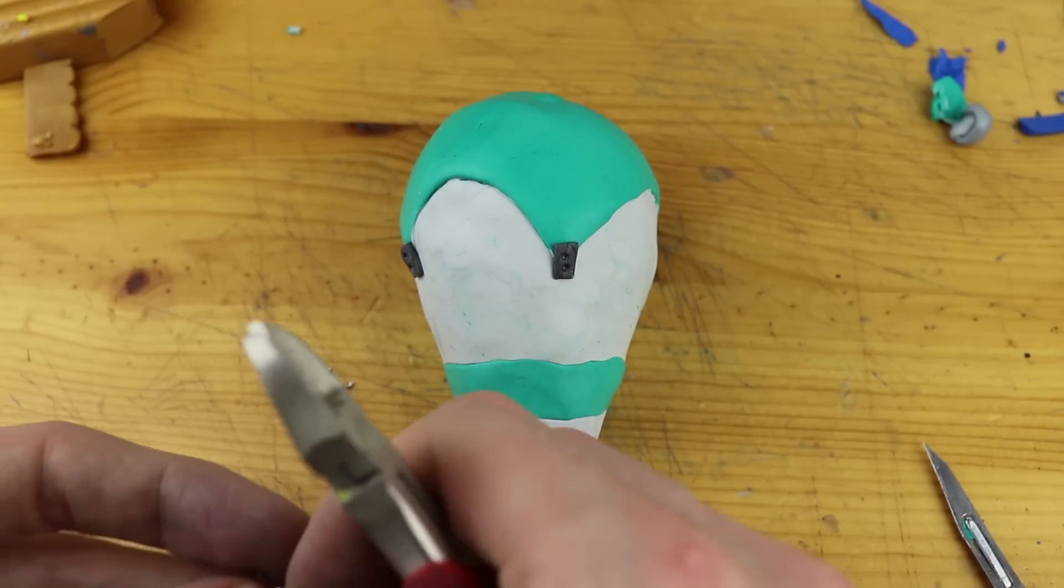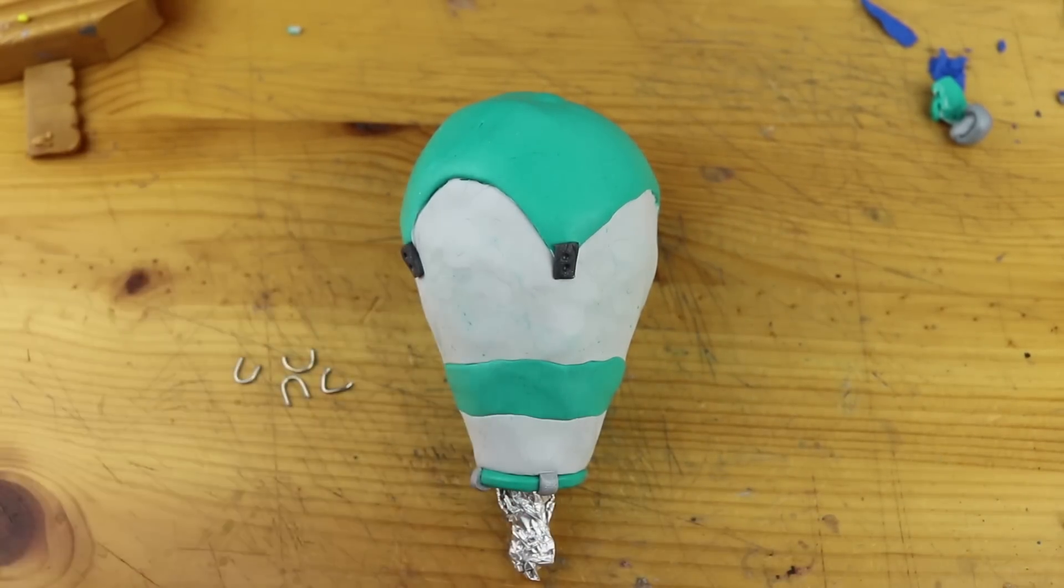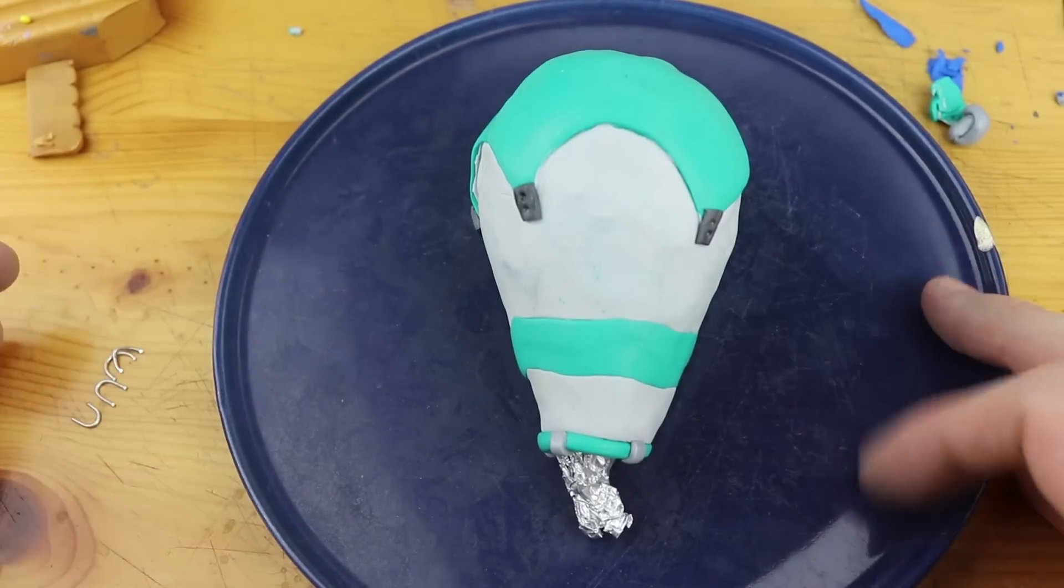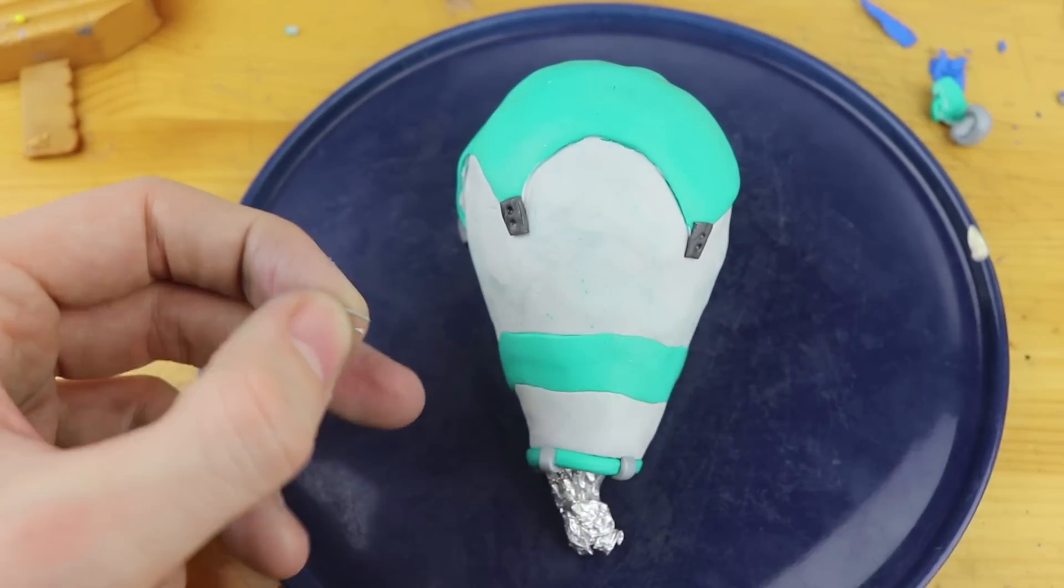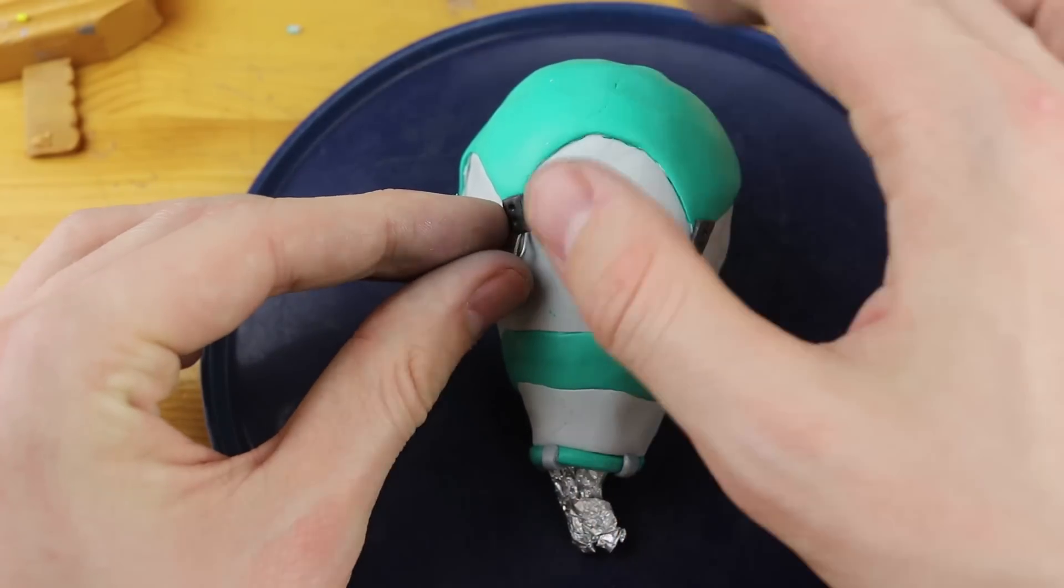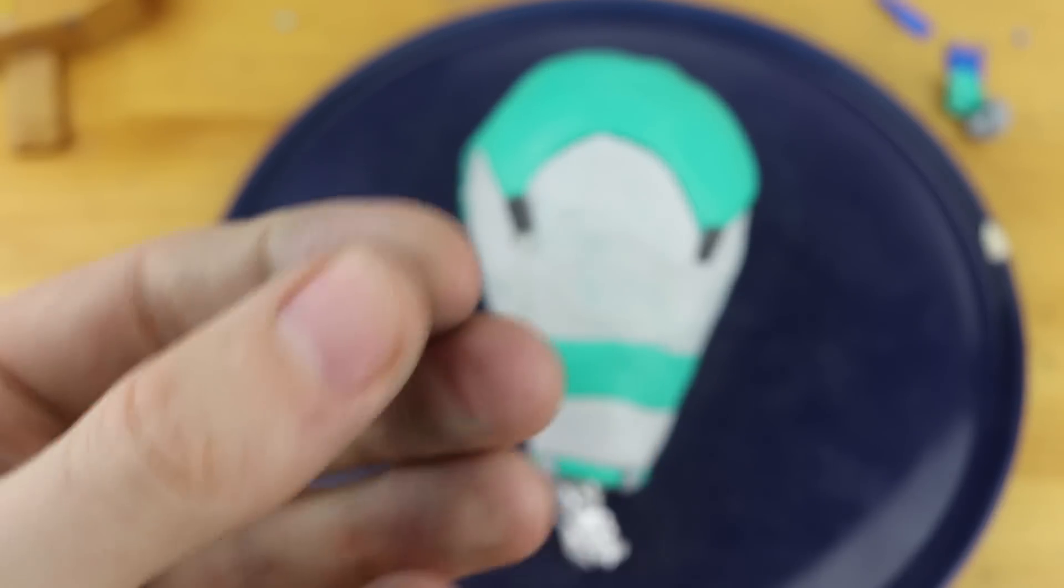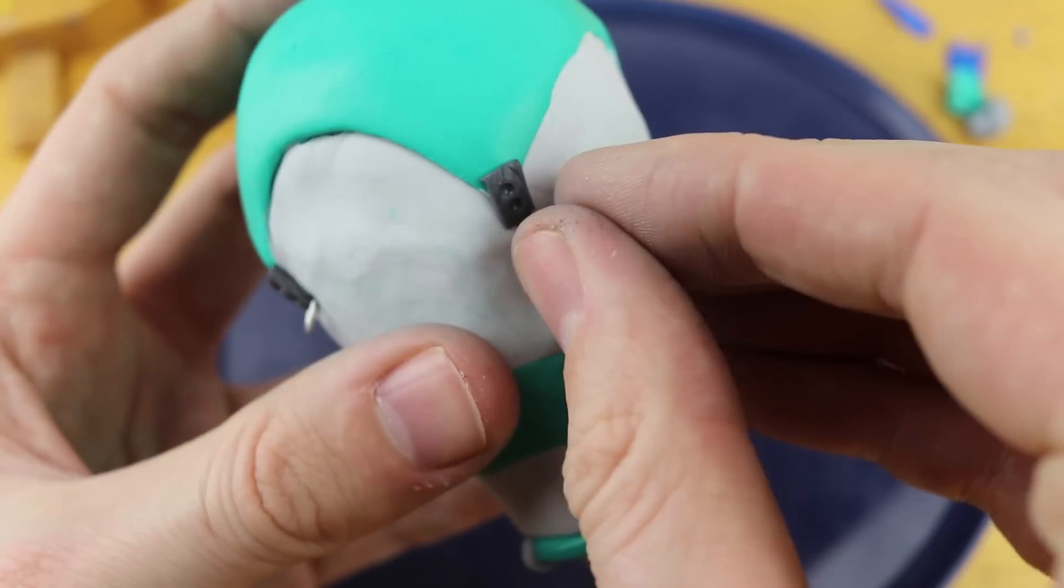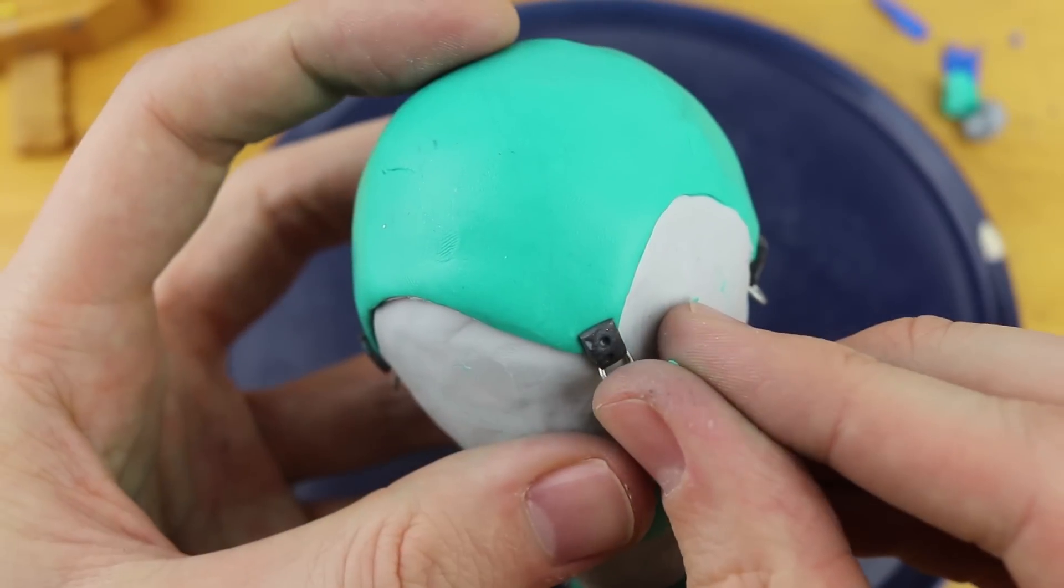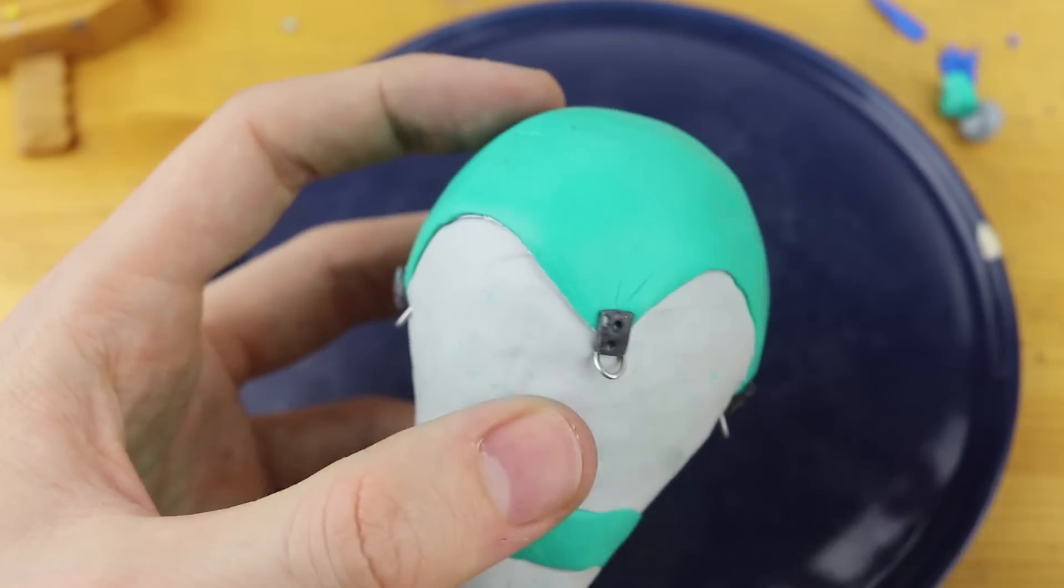And I use these paper clips again to create tiny eyelets where we will also attach the rope to. So just stick these tiny pieces into the clay and after oven hardening it shouldn't be a problem and they should be very strong and straight in position.